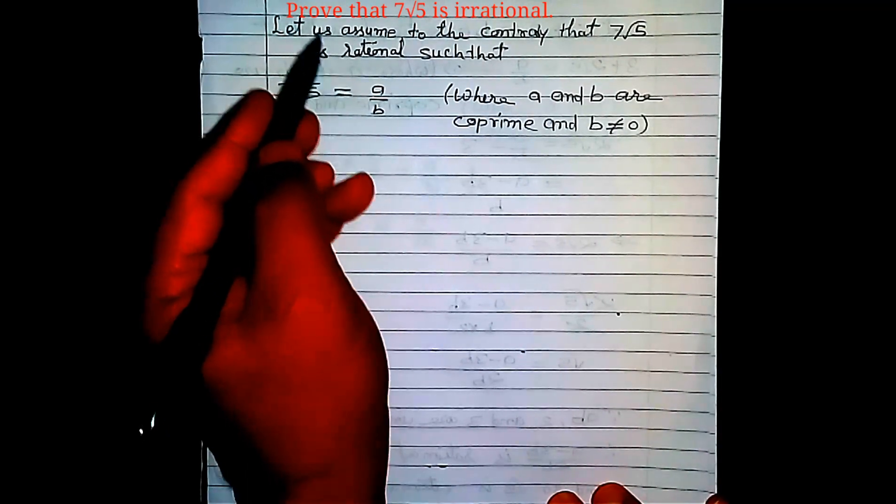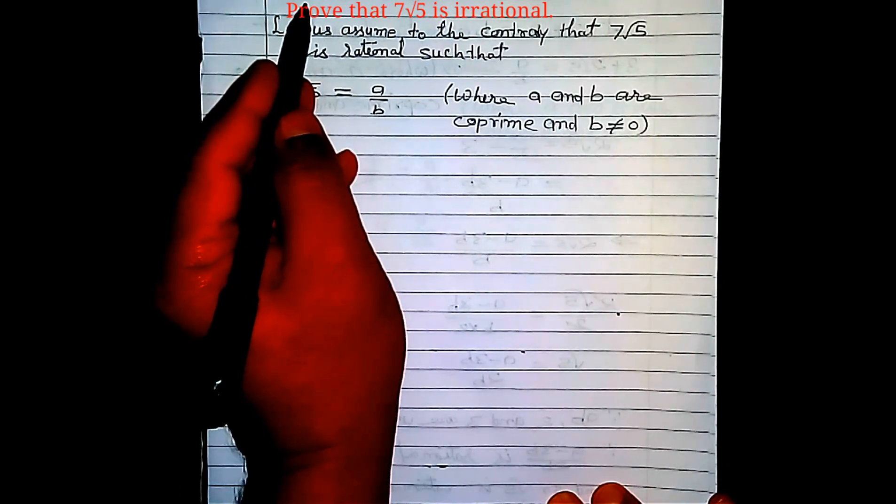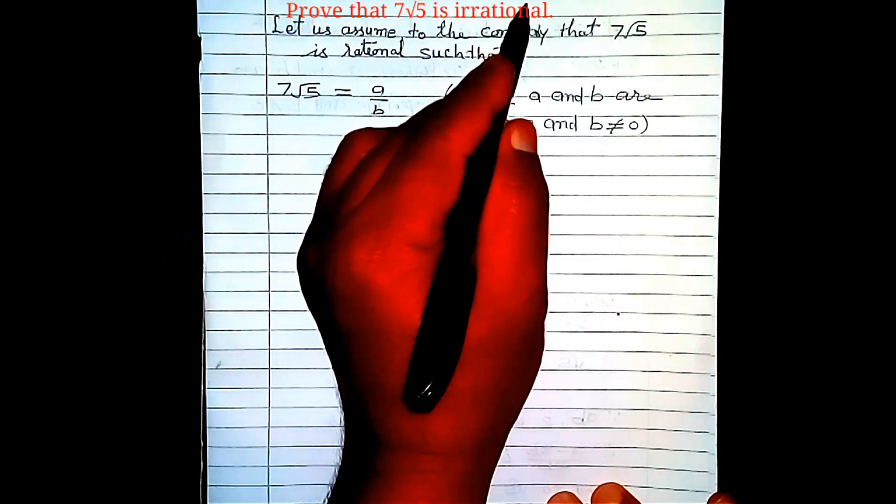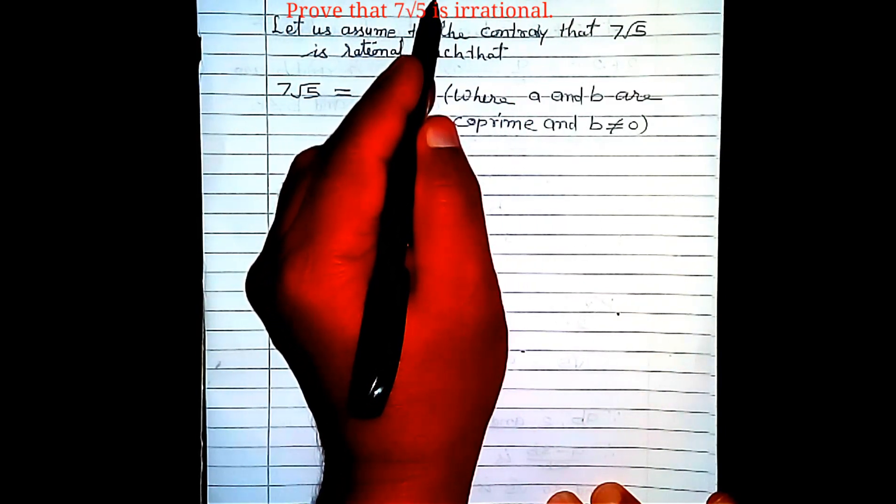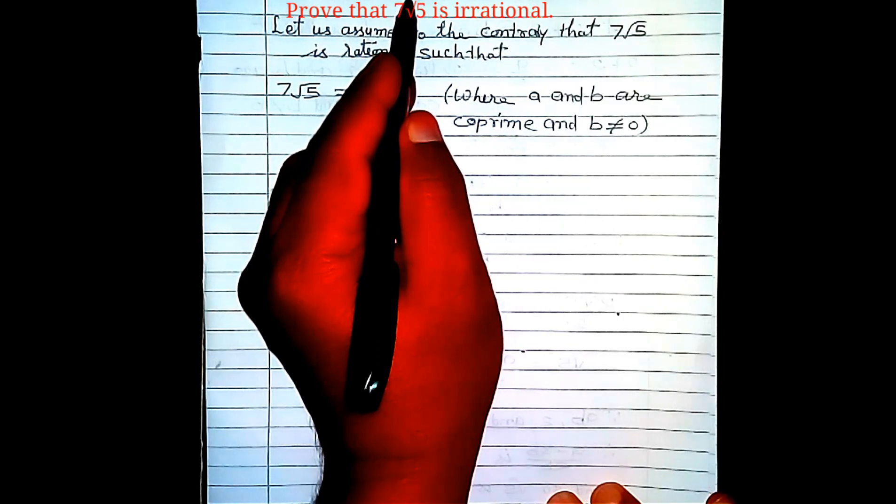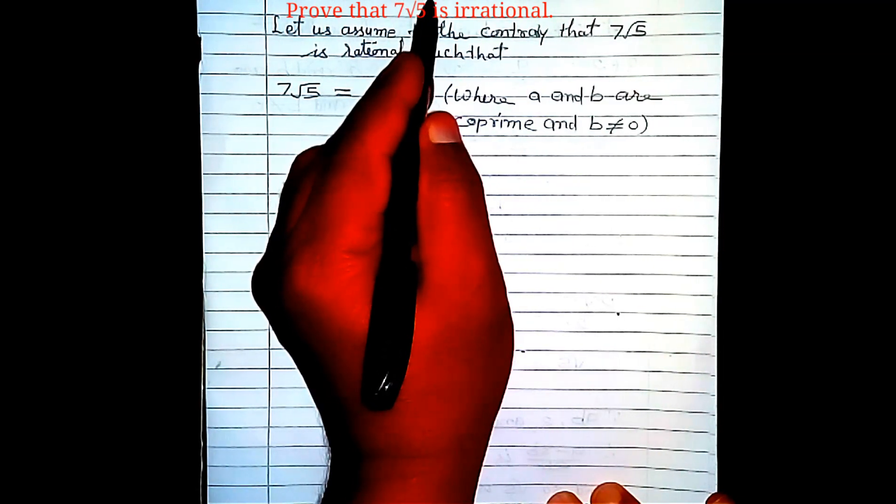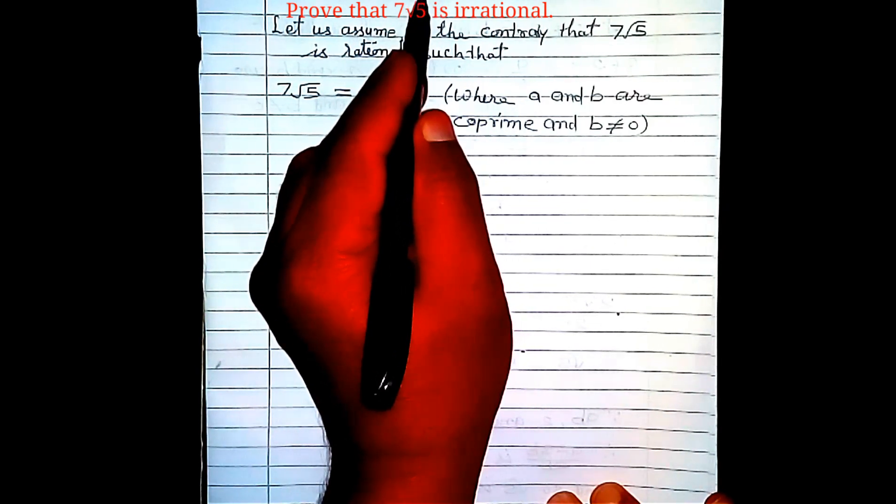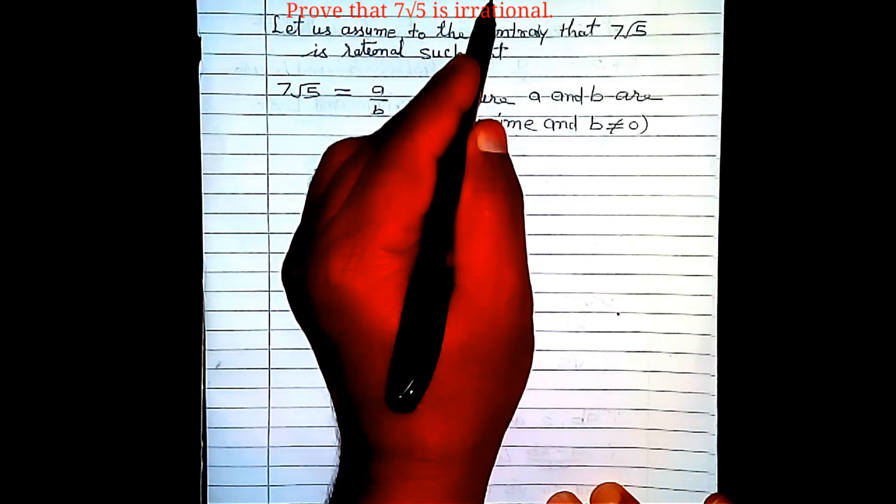Hello and welcome to my YouTube channel Math Mitra. In today's video lesson, we are going to prove that 7√5 is irrational. What is 7√5? 7√5 is the product of a rational number 7 and an irrational number √5. So we are going to see whether 7√5 is irrational or rational.